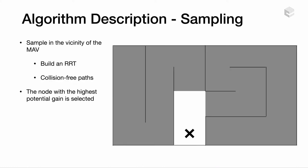The following slides will explain in depth how the algorithm works. First, let's start with the sampling process. The map depicted in this slide represents a maze, the cross is a drone, the white area is the already mapped and the gray zones are unexplored areas.